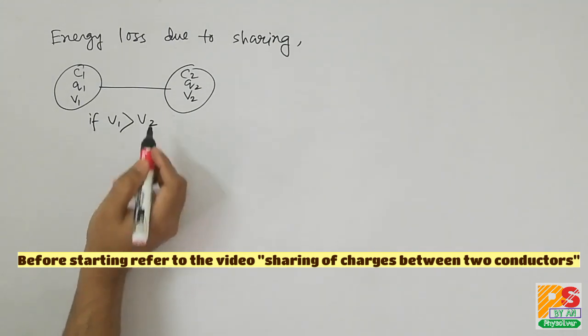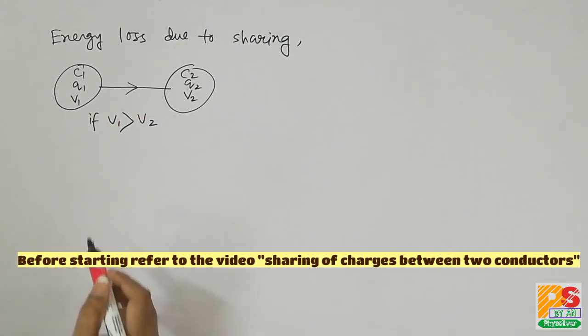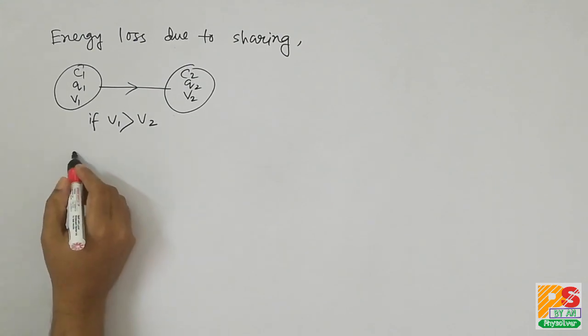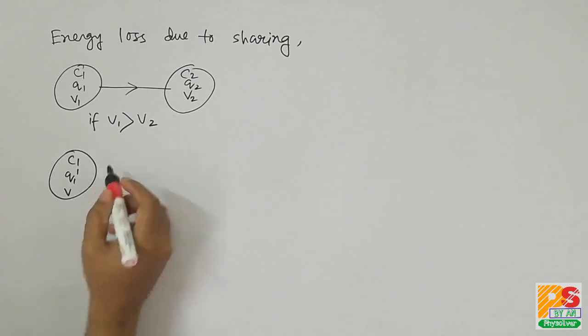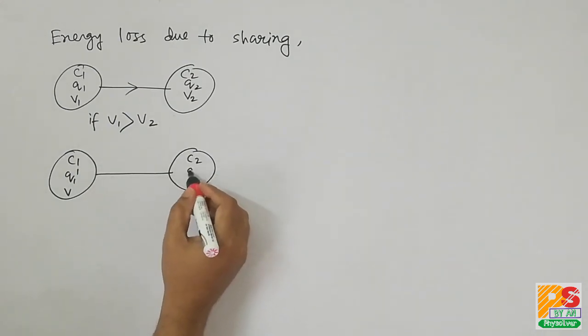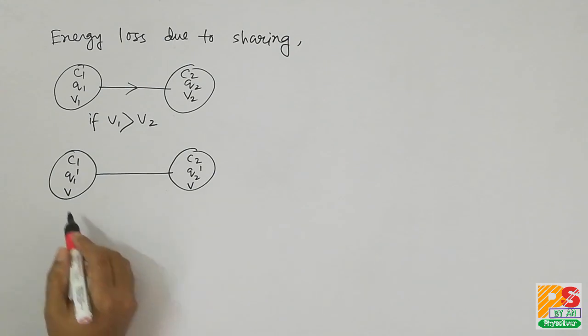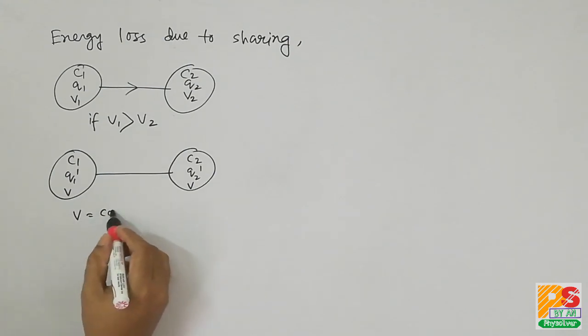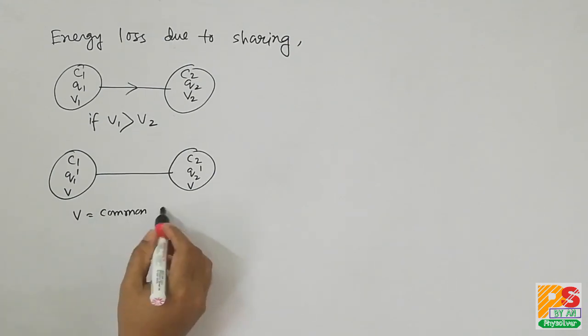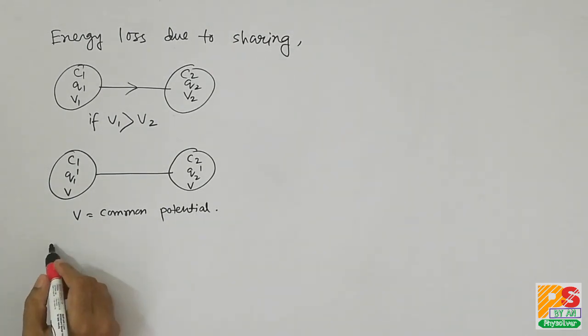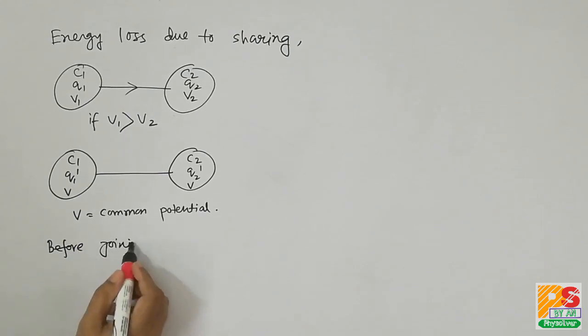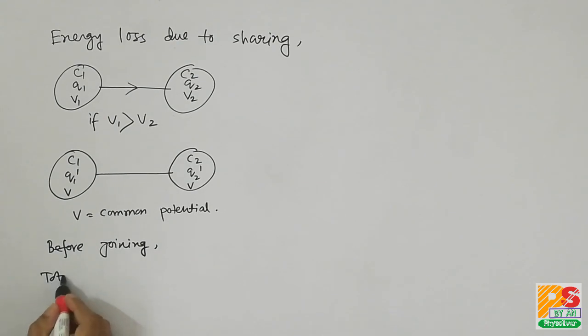We have two conductors of different capacity and different potential and charges. If V1 is greater than V2, then charges will flow from the first to the second, that is from left to right. Finally they will acquire a common potential V, and we all know V will be C1 V1 plus C2 V2 divided by C1 plus C2.